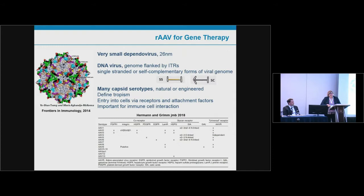There are several kinds of AAV particles composed by the type of genome packaged, either single-strand or self-complementary — these are important signals that innate sensing molecules can detect. The protein capsid surrounds this genome, and there are many different capsid serotypes: about 13 natural serotypes plus many engineered variants. These capsids define the tropism of the particle based on receptors and cofactors, and determine both entry into target tissues and interaction with the immune system.